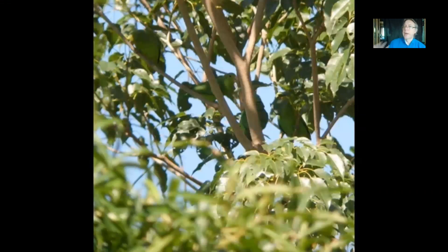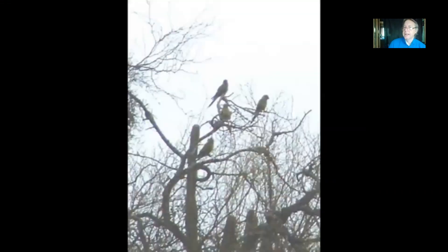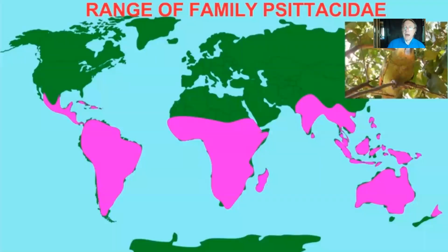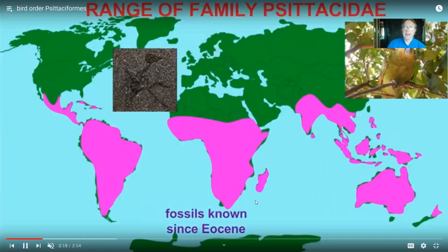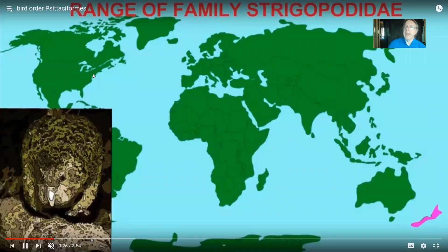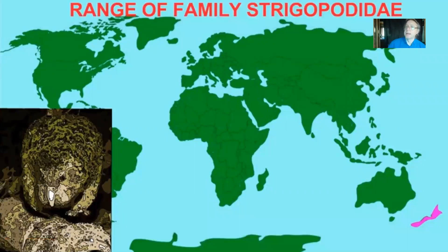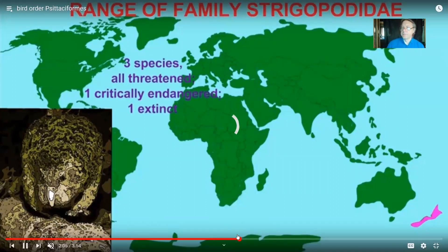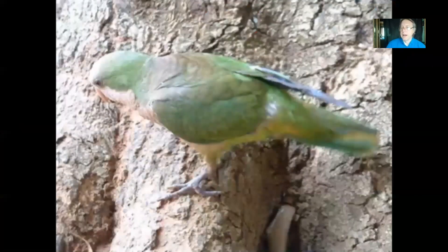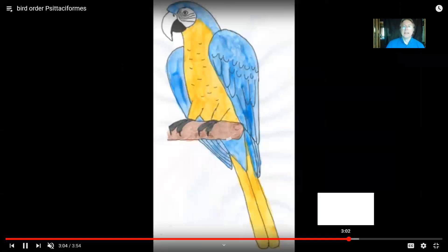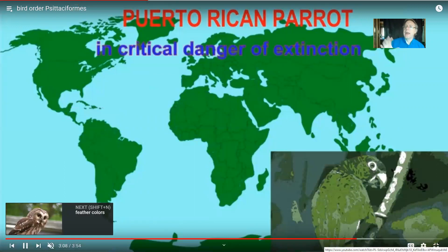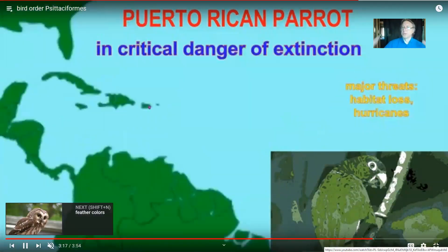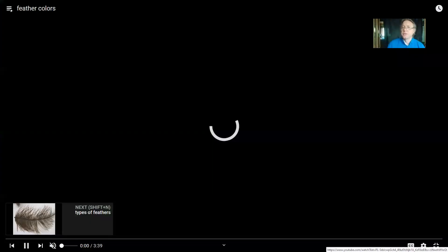For example, the Psittaciformes include parrots and parakeets, which are largely in Latin America, Southern Africa, Southeast Asia, and Australia. If you live in the United States, there would be no native parrots there — though there once were. The Carolina parakeet was found throughout the eastern United States, but it became extinct several hundred years ago because of human influence. And so, because many birds are specific to different parts of the world, having just introduced the idea that bird classification follows the same nested hierarchy of groups of varying degrees of relationship.